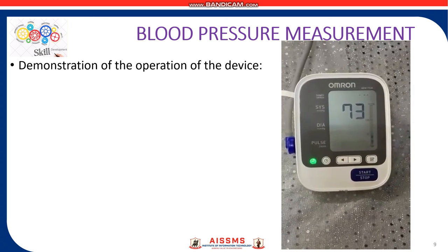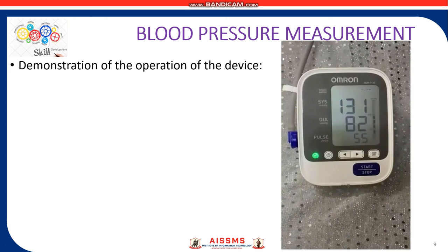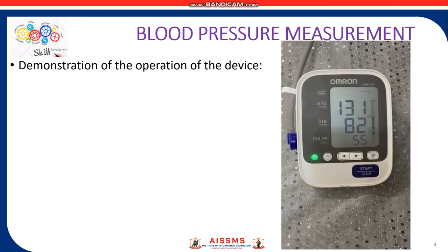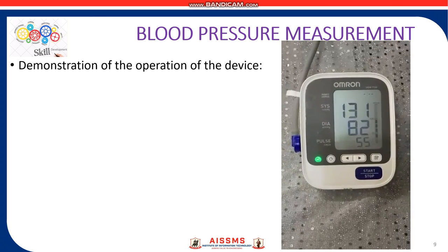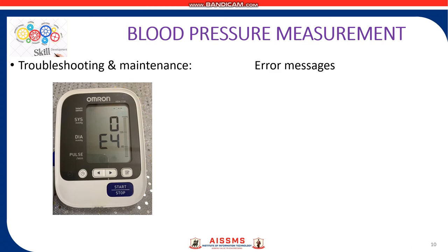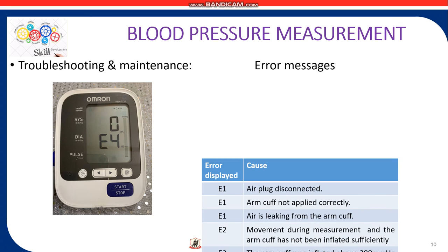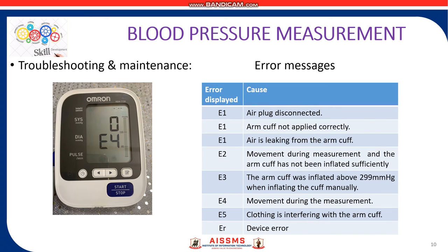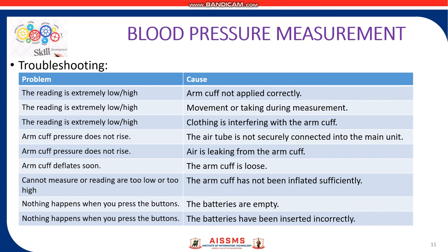This automatic blood pressure monitoring device requires four AAA batteries to operate. The troubleshooting and maintenance of the device includes certain error messages that are displayed, ranging from E1 up to E5 and ER, and their possible causes are listed in the table. Some problems, their root causes, and corresponding solutions are also listed in the troubleshooting table shown.